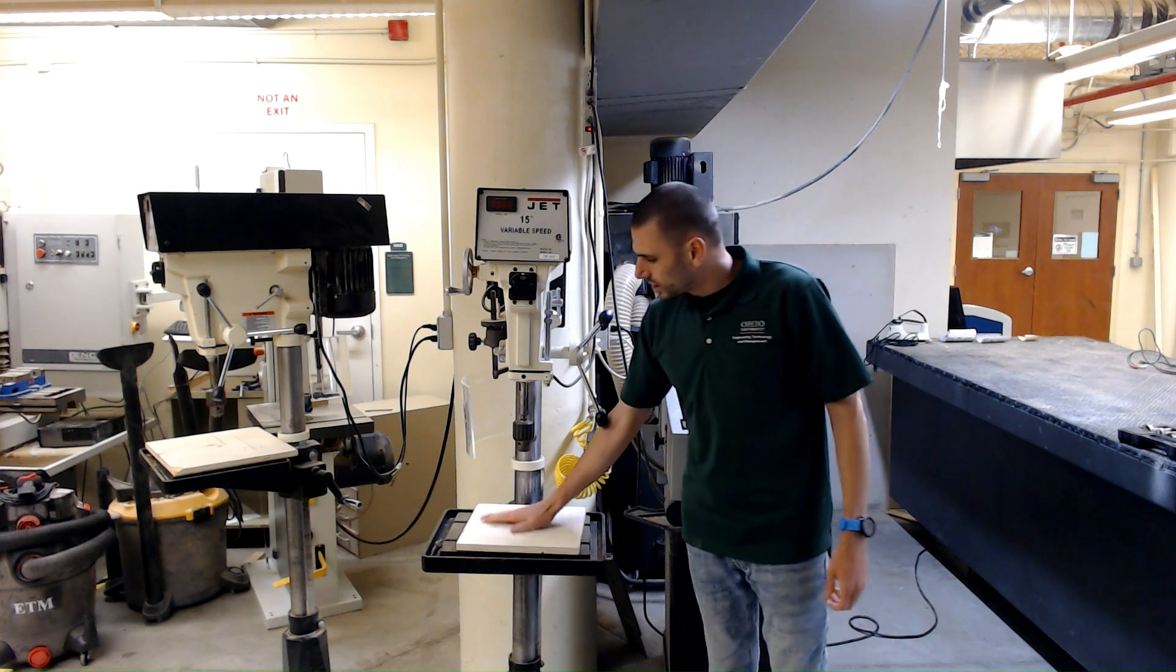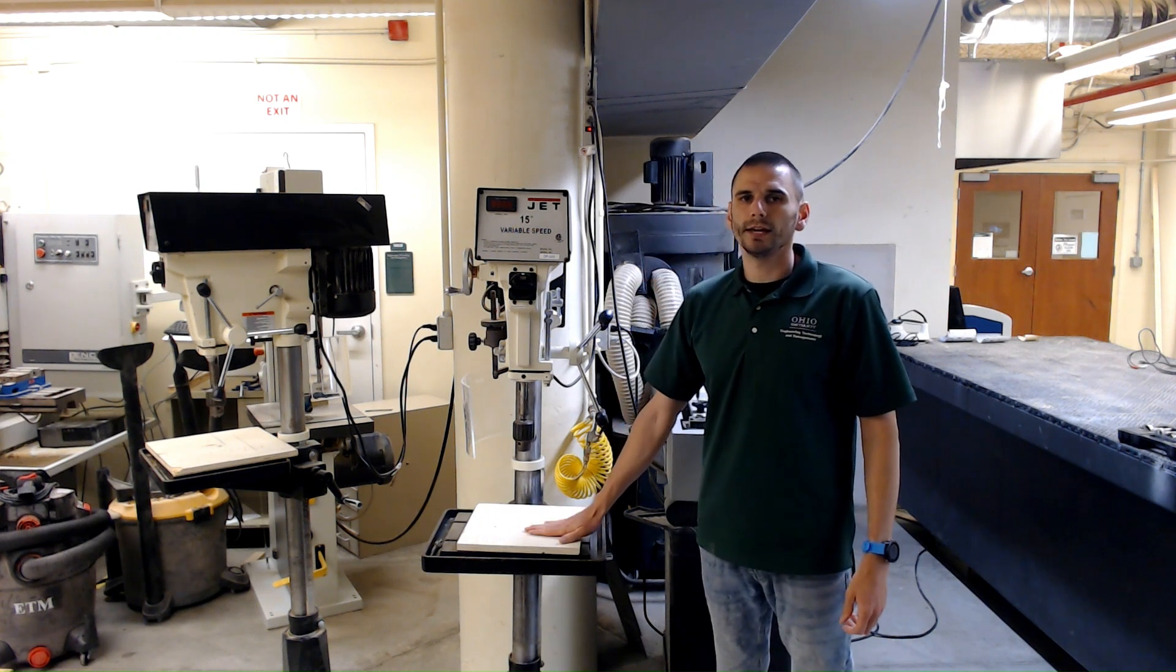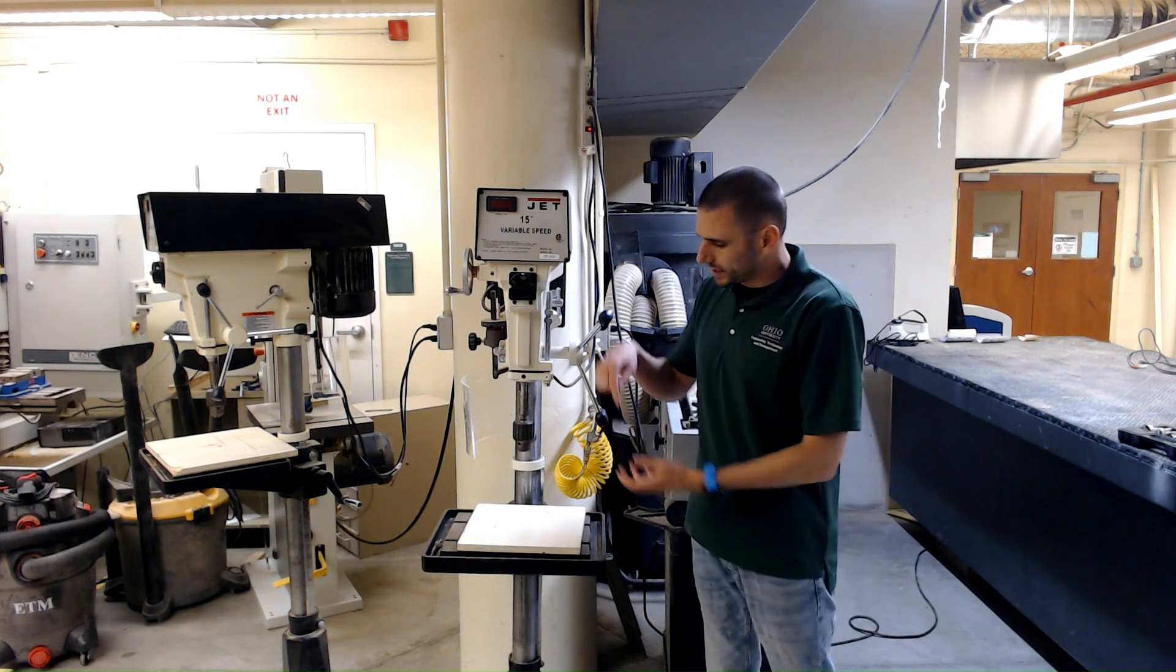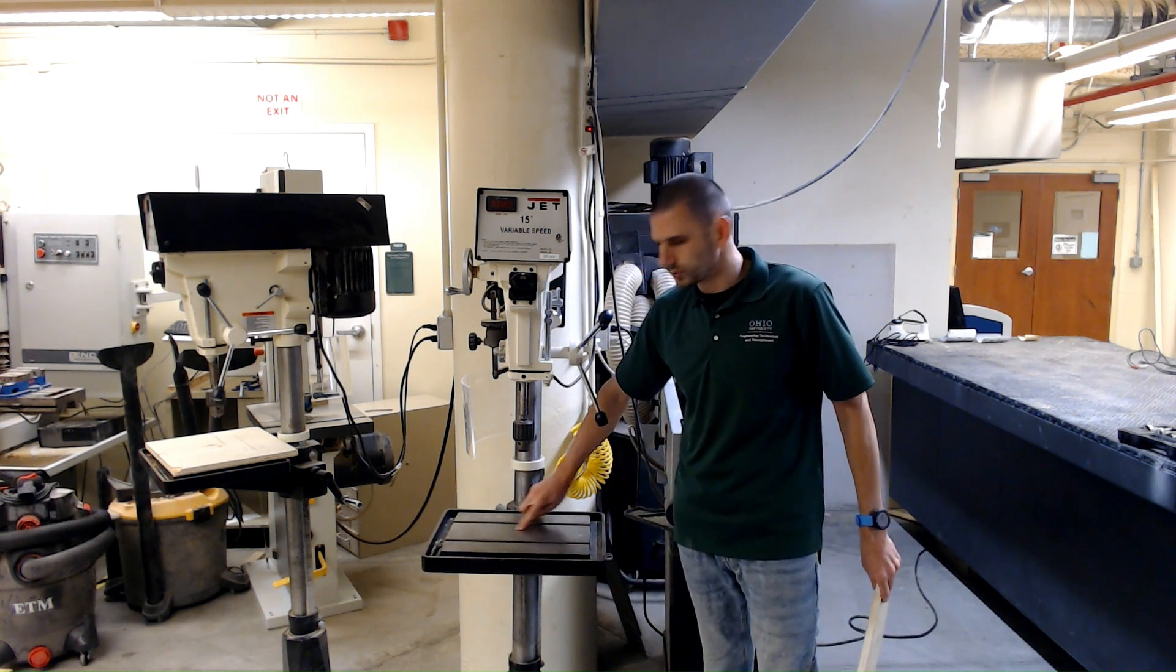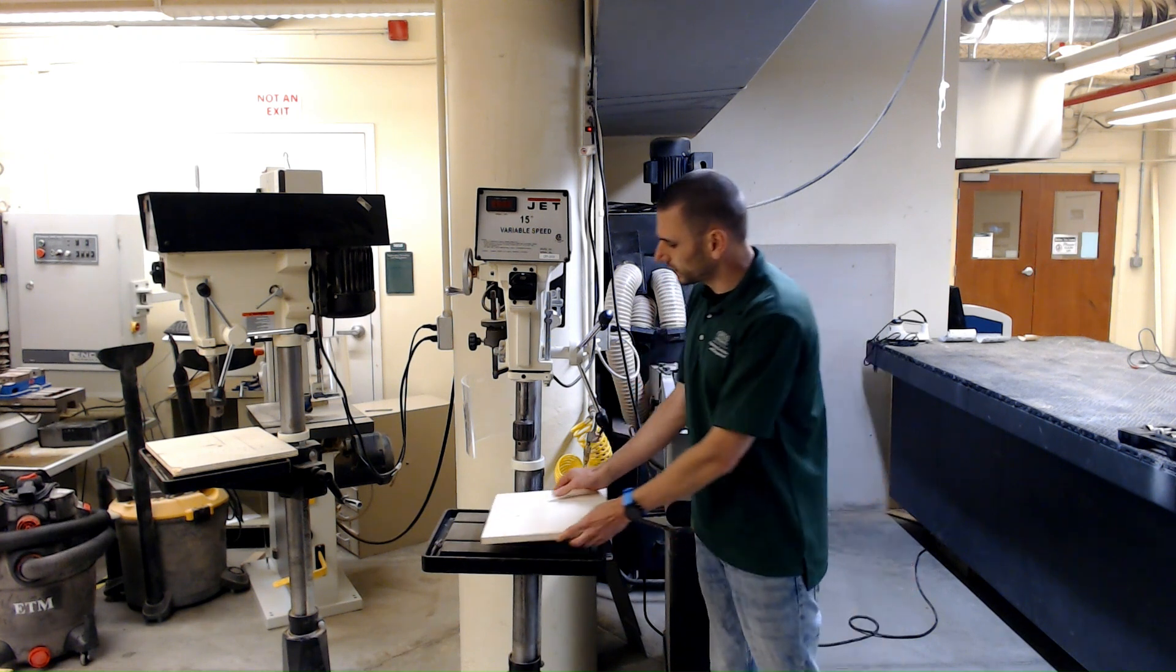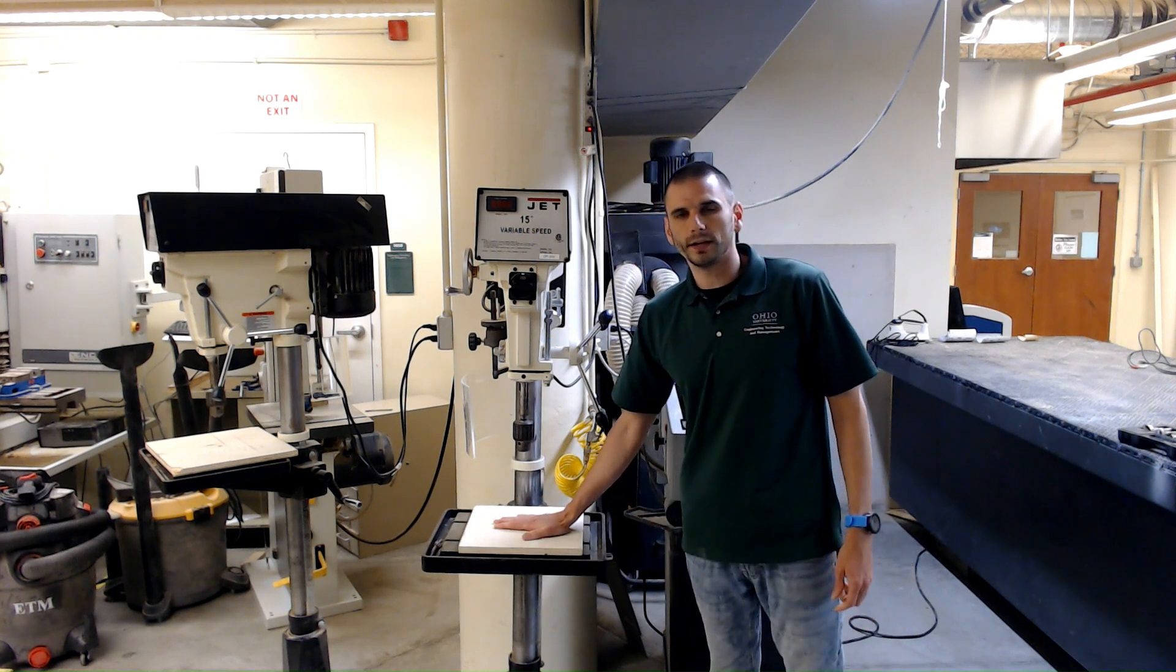We typically keep this wooden plate on here so that when you drill through, you can punch through your material and you don't drill into the steel plate. If you look here, you'll see lots of holes where students have done that already. We'll just keep a wooden sacrificial plate on here and you can drill through that.